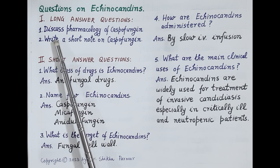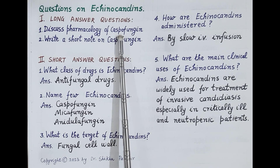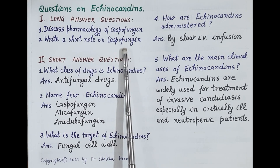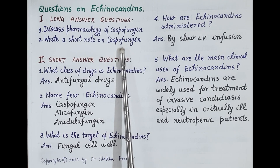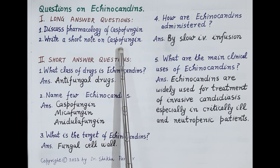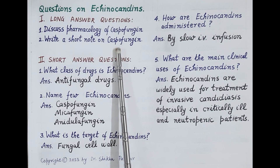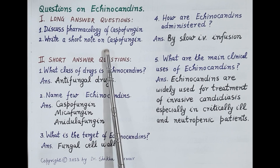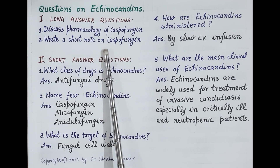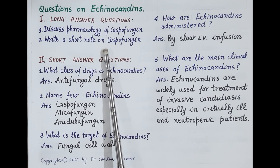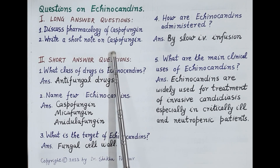For long answer questions such as 'Discuss the pharmacology of caspofungin' or 'Write a short note on caspofungin,' first mention the class — it belongs to the antifungal class of echinocandins. Then explain the mechanism of action, followed by pharmacokinetics — remembering that it is given by slow IV infusion. Then discuss the uses, particularly that caspofungin is very effective in the treatment of deep and invasive or systemic candidiasis. Finally, discuss the adverse effects.